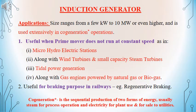We will now discuss some of the applications of induction generator. It is mainly used for cogeneration operations, which implies the production of two forms of energy — steam for process operation as well as electricity produced either for the plant or for sale. The induction generator is mainly used when the prime mover does not have any constant speed of operation. For example, micro hydroelectric stations, wind turbines, small capacity steam turbines, tidal power generation, along with gas engines powered by natural gas or biogas. It is also used for braking purposes in railways, that is for regenerative braking in the case of electric vehicles.